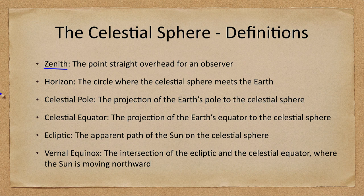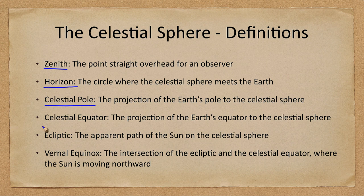The horizon is the circle where the celestial sphere meets the Earth — if you look out toward the edge where the sun rises or sets, that would be your horizon. The celestial poles — there's a north and south pole — are the projections of the Earth's poles to the celestial sphere. And the celestial equator similarly is the projection of Earth's equator out to the celestial sphere.